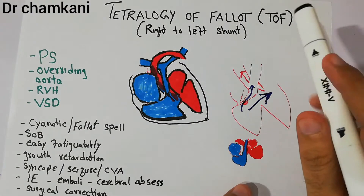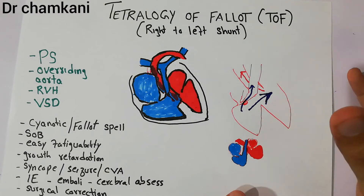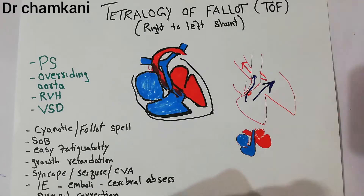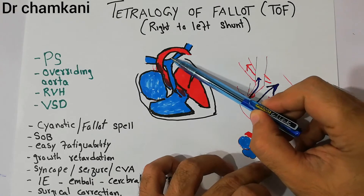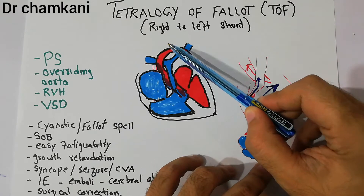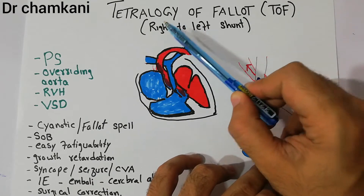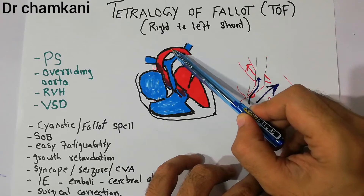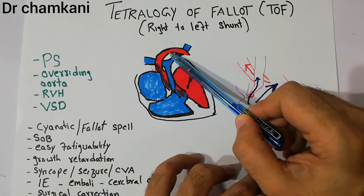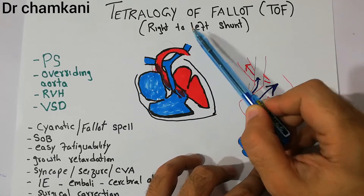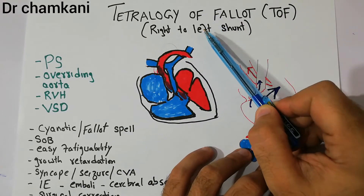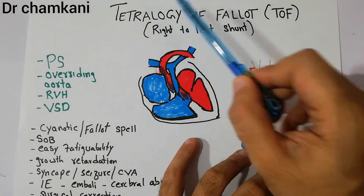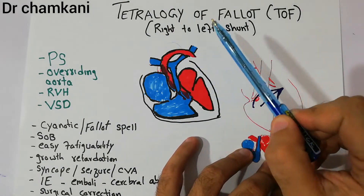In the last lecture we discussed the PDA, patent ductus arteriosus, which was basically a connection present between the pulmonary artery and aorta. PDA was a left-to-right shunt in which blood from the aorta, the left side of the heart, was coming back into the pulmonary artery and into the lungs. But Tetralogy of Fallot is the right-to-left shunt.